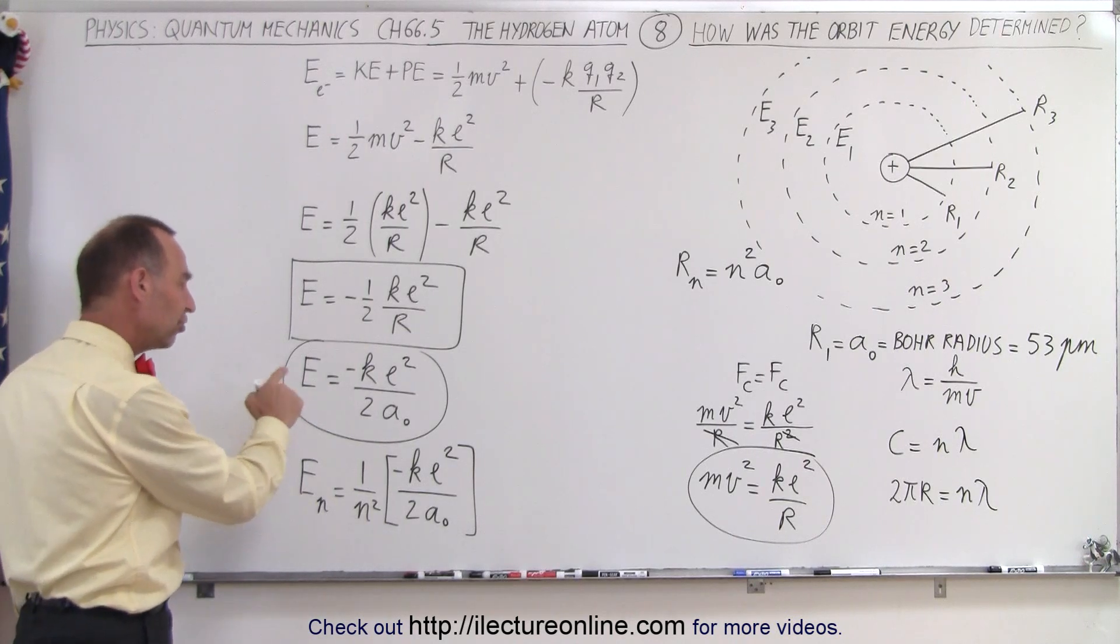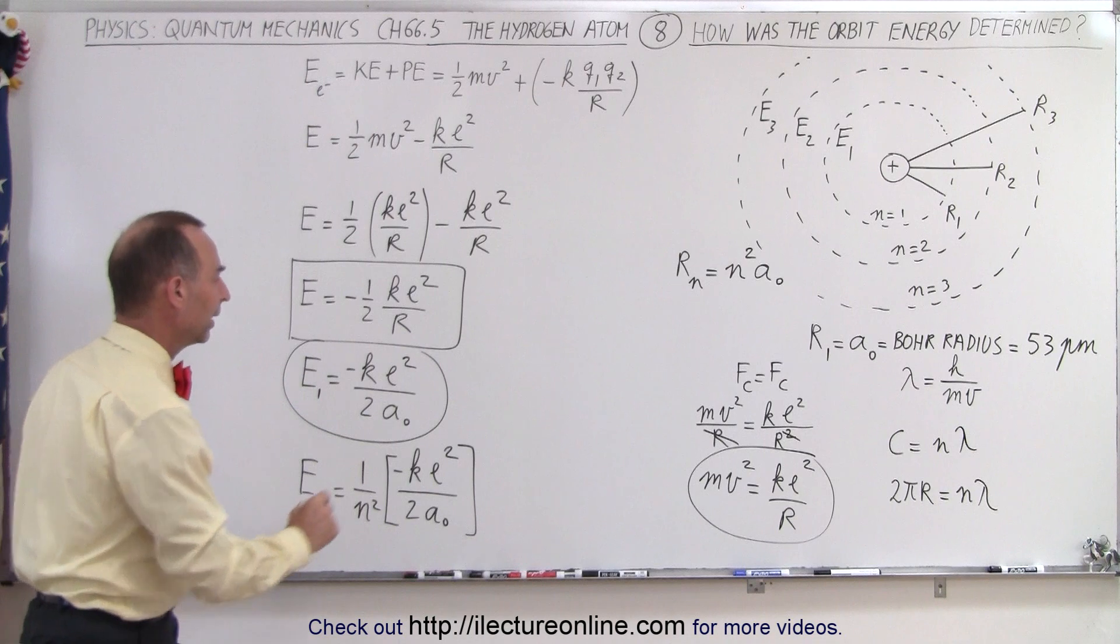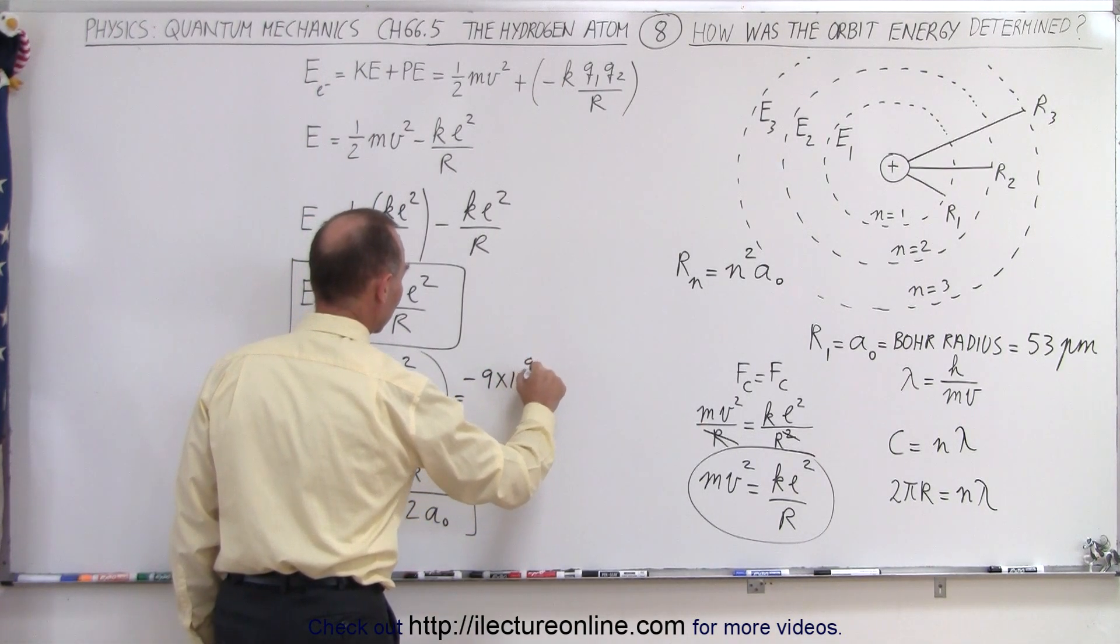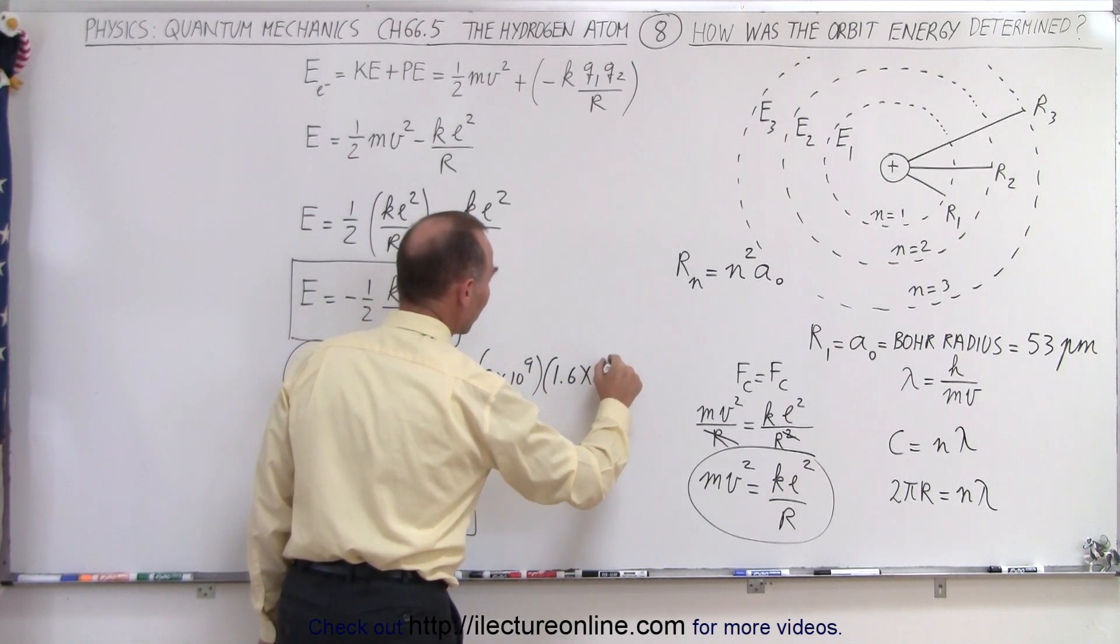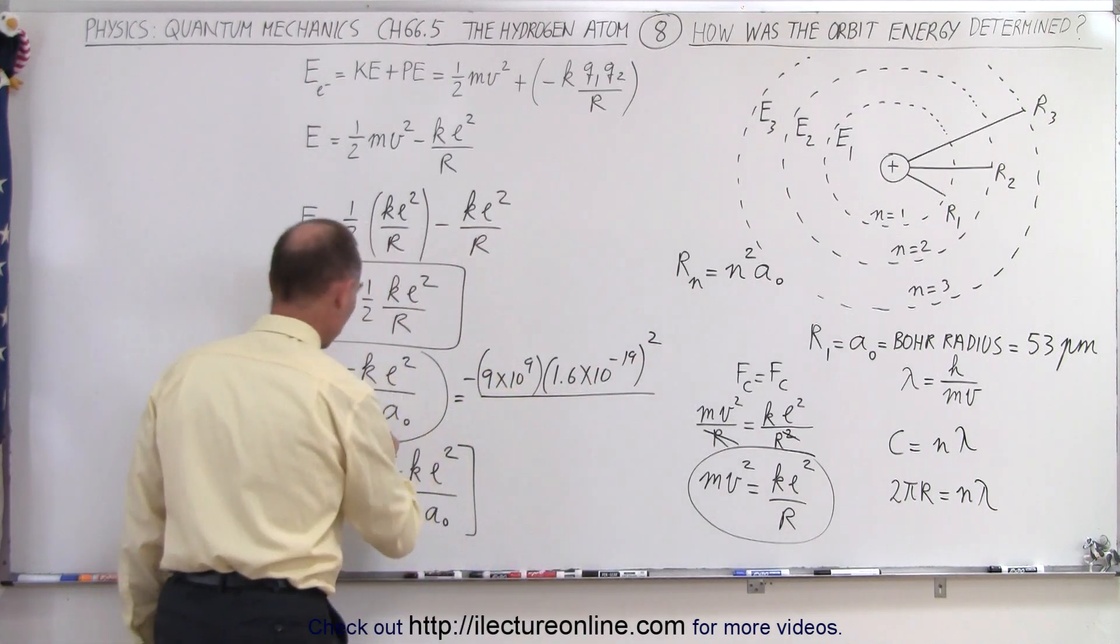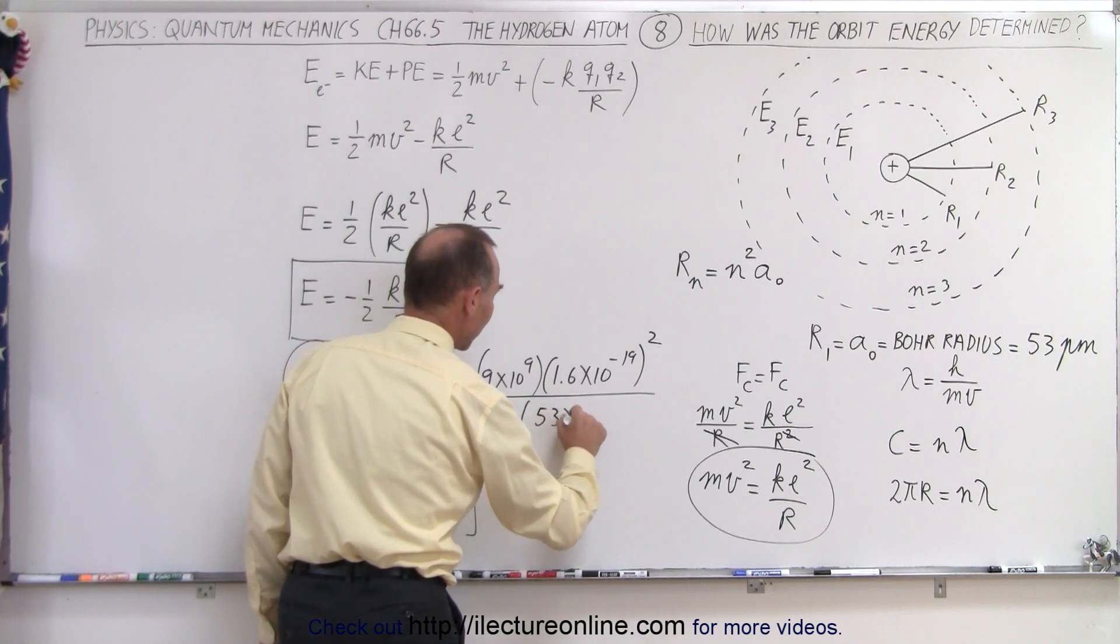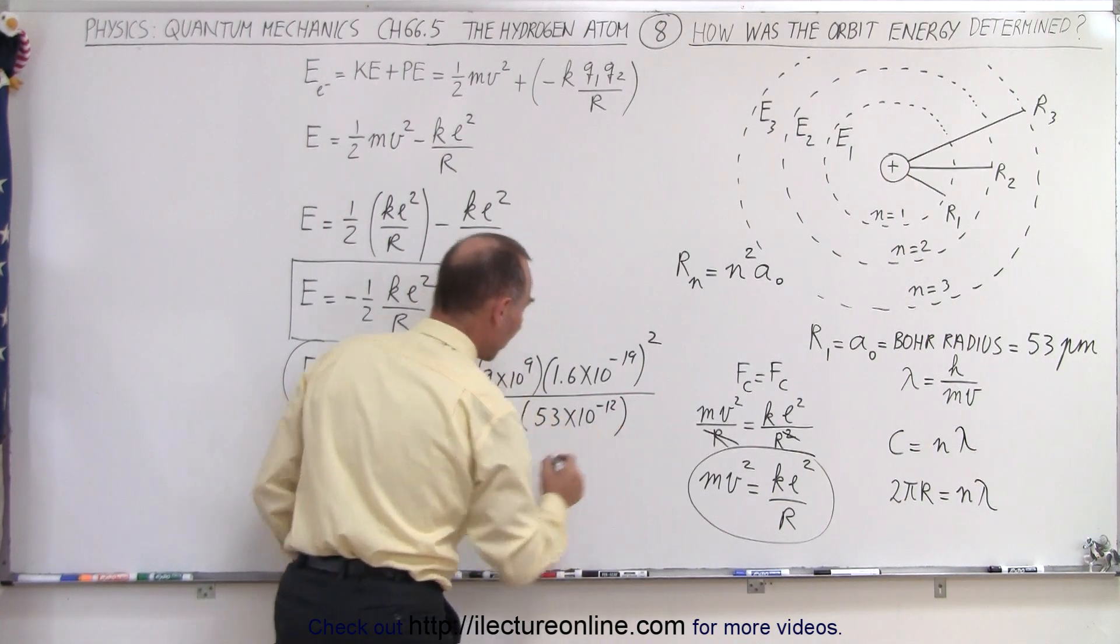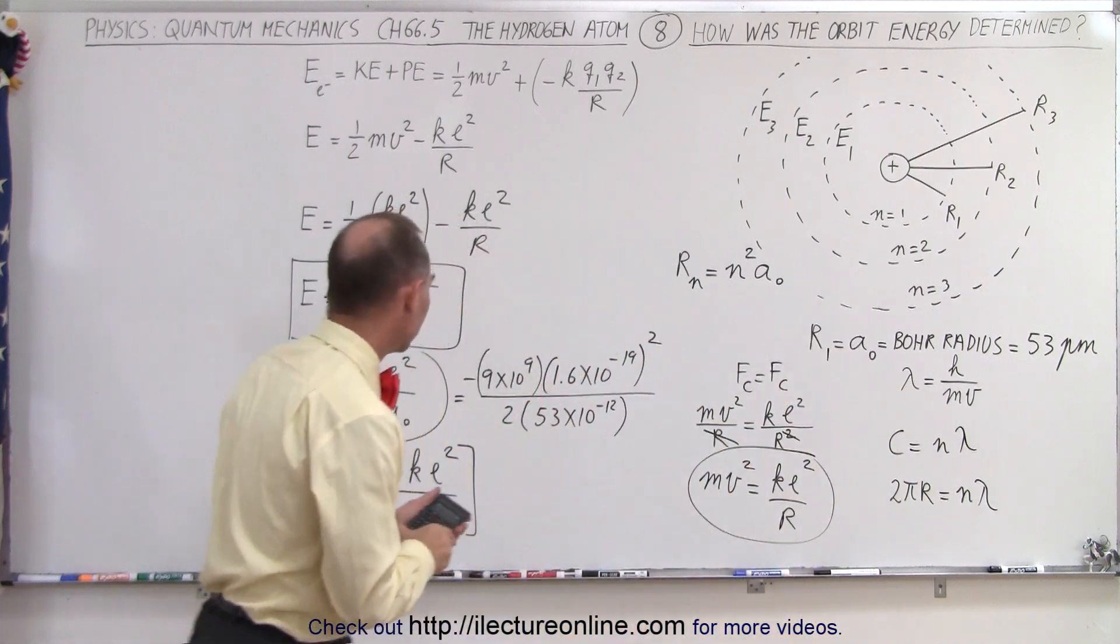Now, you may wonder, well, what's this energy equal to? So this would be energy of the first energy level. And so when we plug in numbers, that gives us minus 9 times 10⁹ for the constant k, e is 1.6 times 10⁻¹⁹. We have to square that, divided by 2 times the Bohr radius, which is going to be 53 times 10⁻¹² meters. All right, I left out the units to keep things a little cleaner.